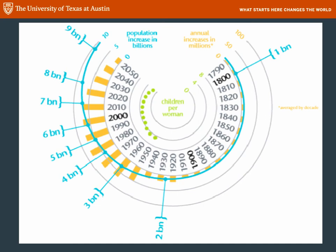Then it started to stretch out again — the seventh billion took 14 years. It's projected the eighth billion will take about 15 years and the ninth about 20 years. Are we reaching a carrying capacity? We are certainly slowing population growth. Part of that is answered in green by the number of children per woman. Starting in 1950, average worldwide women had about five children per woman, and now it's down to less than two as a worldwide average.